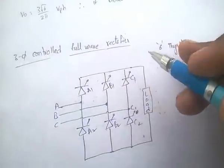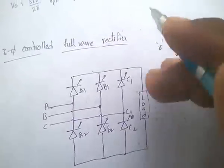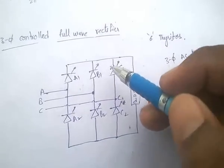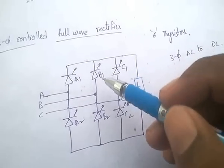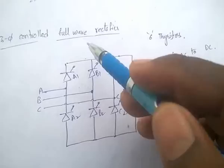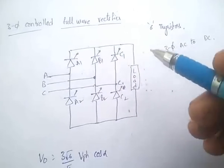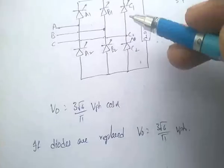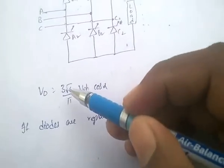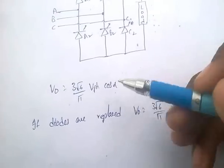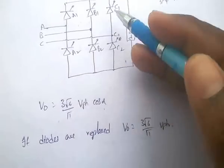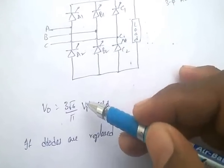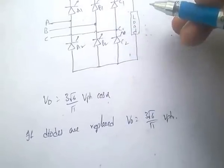Three phase controlled full-wave rectifier uses six thyristors to convert three-phase AC to DC. Output voltage V₀ = (3√6)/π × Vphase × cos α. If diodes are used instead of thyristors, V₀ = (3√6)/π × Vphase (no cos α term).